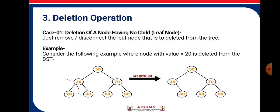Deletion operation. Deletion of a node having no child, that is a leaf node — just remove and disconnect the leaf node that is to be deleted from the tree. In this example, 20 is to be deleted and 20 is the leaf node, so we delete 20 directly.